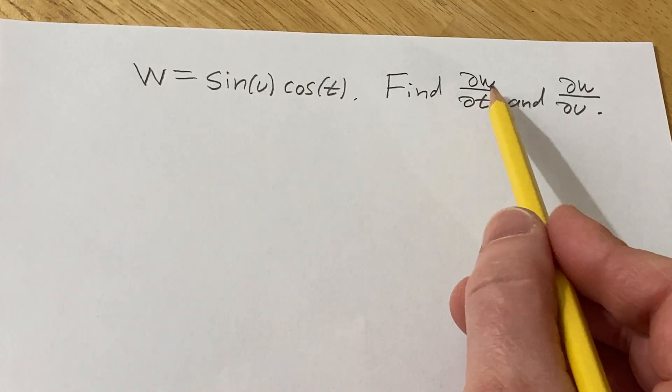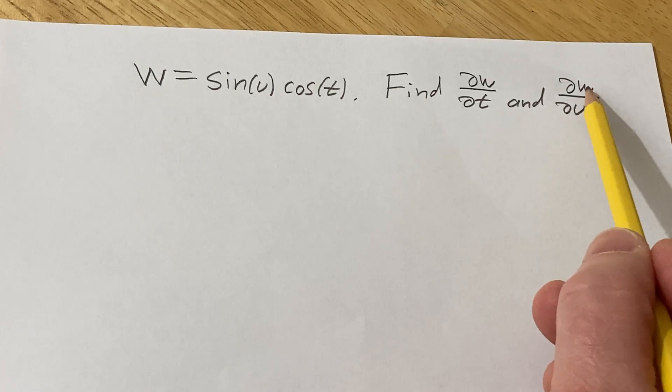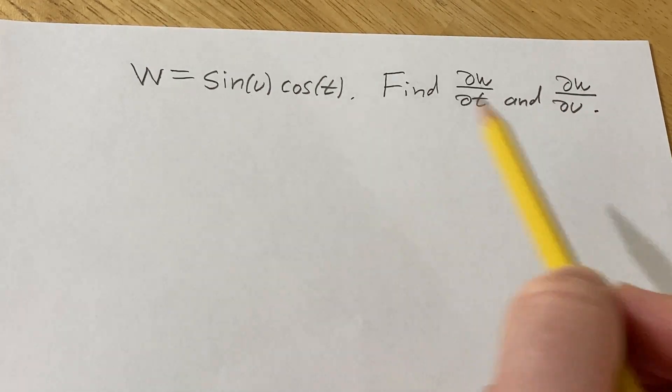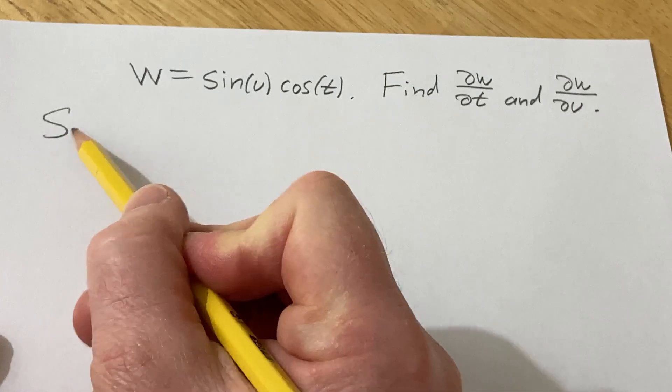We're going to find the partial of w with respect to t, and the partial of w with respect to u. Let's go ahead and jump into it right away, solution.